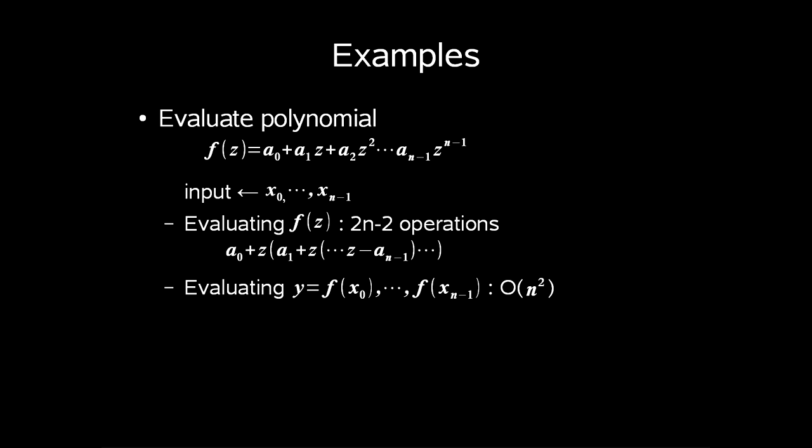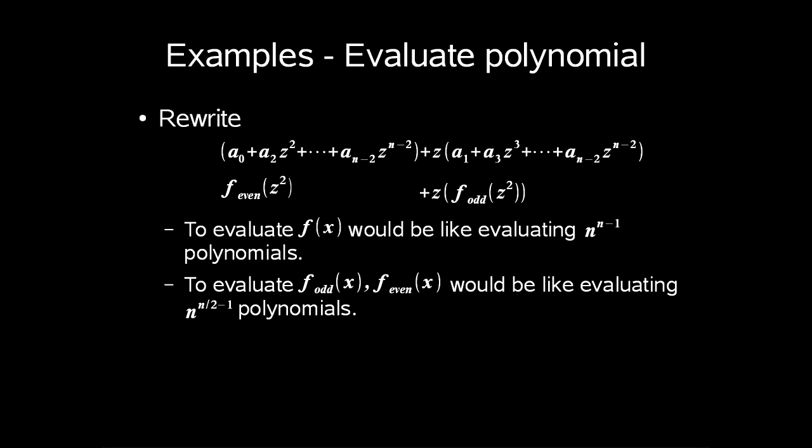To lower this execution time we need to do some improvement on the mathematics to resolve this. Now we could write this in another way, where we split the equation up into an even and odd part. To evaluate f of x would mean to evaluate n to the power of n-1 polynomials. To evaluate f odd or f even would require n to the power of n half minus 1 polynomials. So this split alone would not give us the reduced problem we are looking for though.